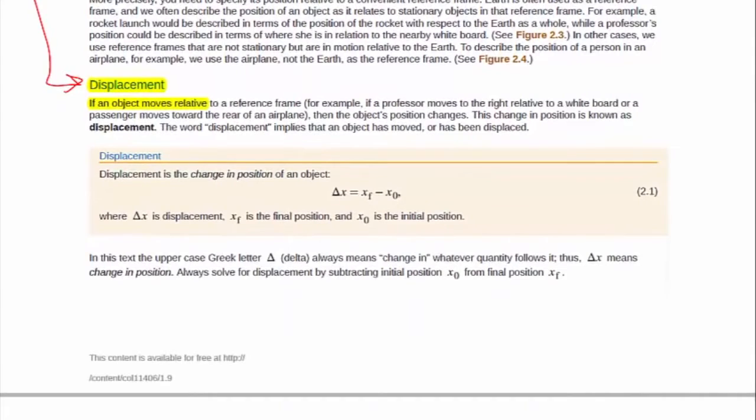One thing I would also like to point out is we will be using the symbol delta quite a lot in this class. From a physics perspective, delta is always the final minus the initial. So delta x is the final position minus the initial position. Delta v will be the final v minus the initial v. It's always a final minus an initial.